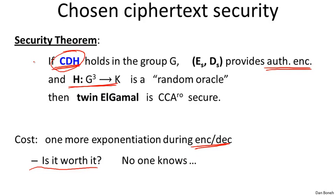But is it worth it? The question is: are there groups where CDH holds but IDH does not hold? If there were such groups, then it would definitely be worth it, because in those groups twin Elgamal would be secure but regular Elgamal would not be CCA secure. Unfortunately, we don't know of any such groups, and as far as we know it's certainly possible that in any group where CDH holds, IDH also holds. So really we don't know whether this extra cost is worth it, but this is a cute result showing that you can achieve chosen ciphertext security directly from CDH without too many changes to the Elgamal system.